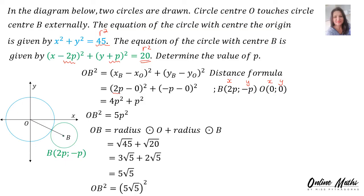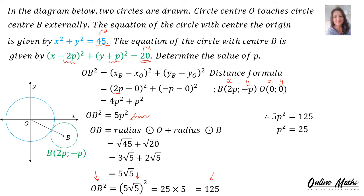Now, this is OB, so we can square both sides. OB² = (5√5)² = 25 × 5 = 125. We now have OB² = 5P² from the distance formula, and OB² = 125 from the radius sum. Equating: 5P² = 125. Dividing by 5: P² = 25. Taking the square root: P = ±5. Therefore, since P > 0, P = 5.